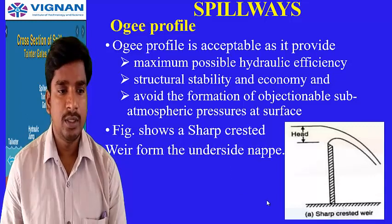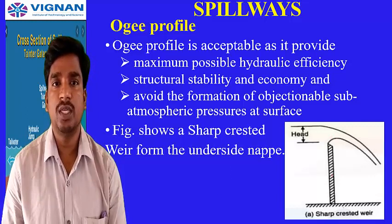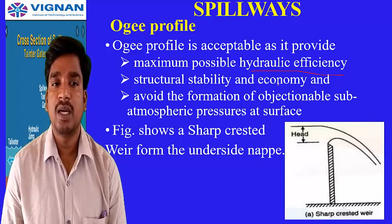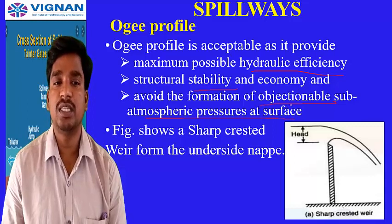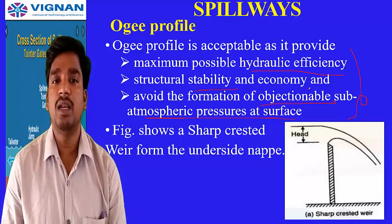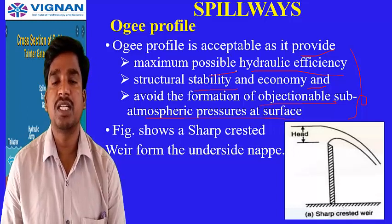This figure shows the Ogee profile. The Ogee profile is designed to provide three prominent features: economy, high hydraulic efficiency, and high structural stability. Additionally, it avoids objectionable sub-atmospheric pressure at the surface. So the Ogee profile is economical, provides maximum possible hydraulic efficiency, and maximum structural stability.